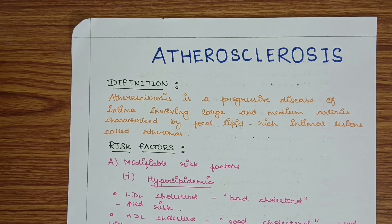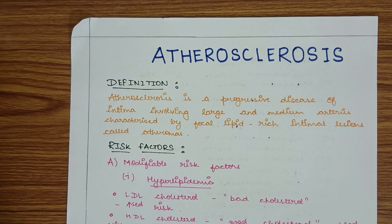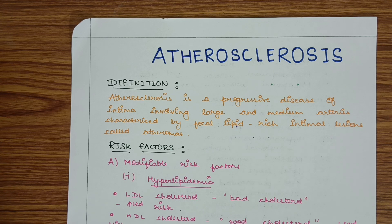In this video, we will see about atherosclerosis. We are going to look into definition, risk factors, pathogenesis, morphology, complications, and consequences of atherosclerosis.